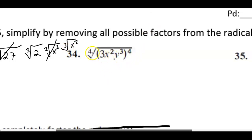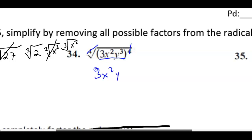For the next problem we have a fourth root. The fourth root of a monomial to the fourth power — they undo each other, so you're just left with that expression. Let's simplify.